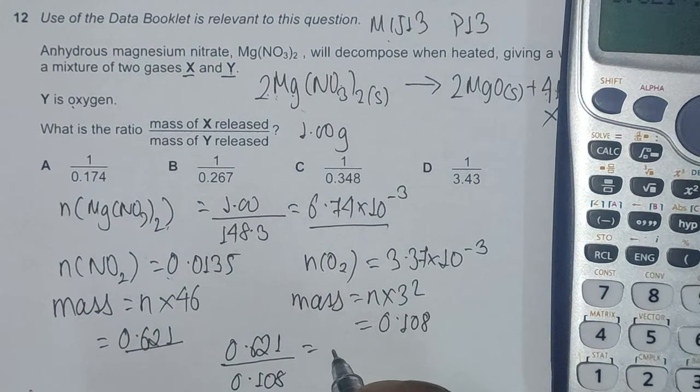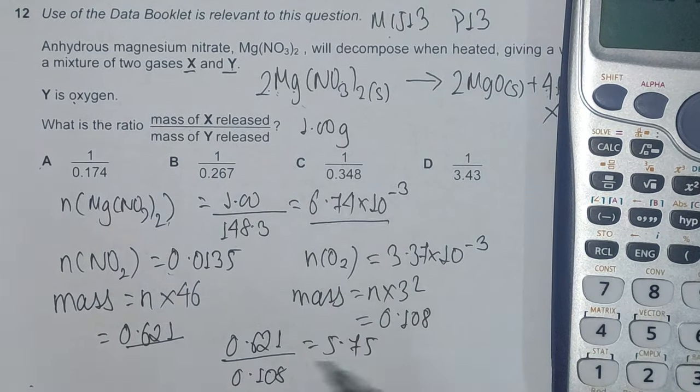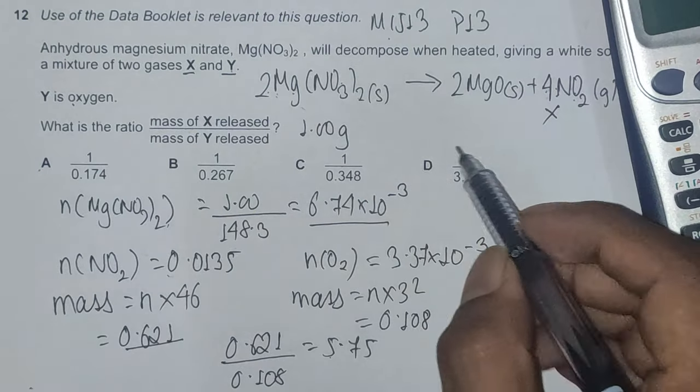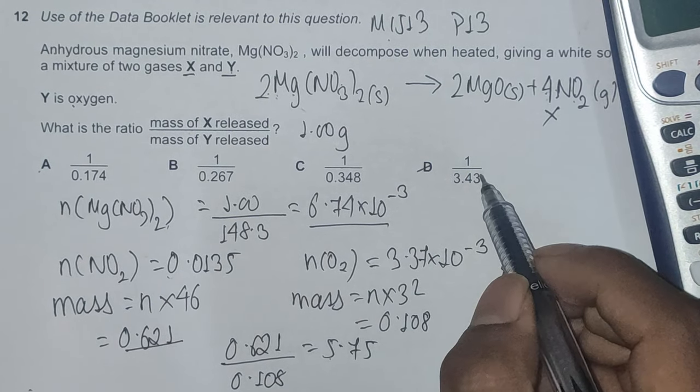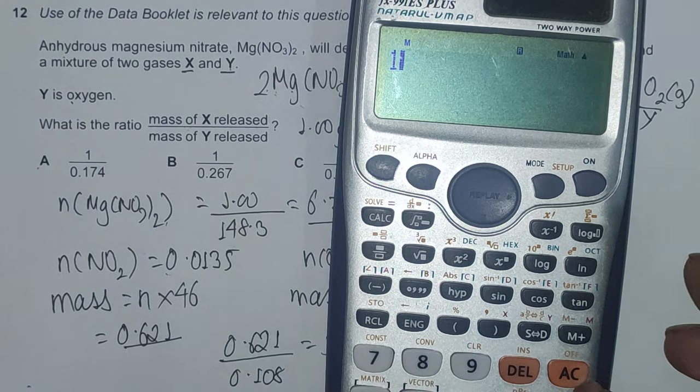So from these four answer choices we have to look closely at which gives 5.75. We can reject D because the denominator is greater than the numerator. We'll look at options A, B, and C. 1 by 0.174 for option A gives us 5.75.